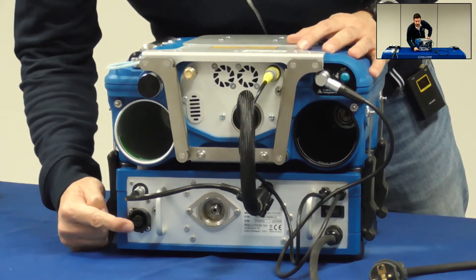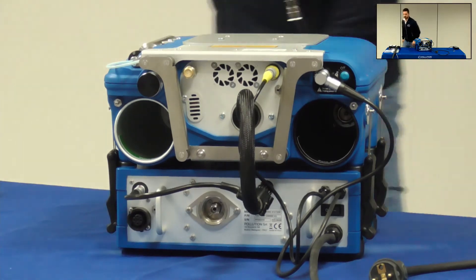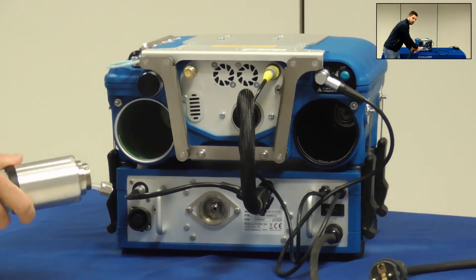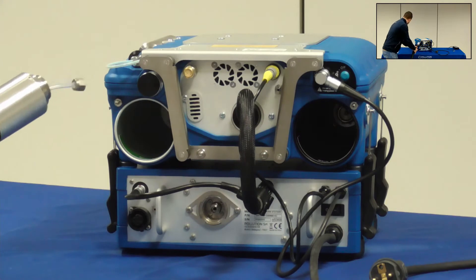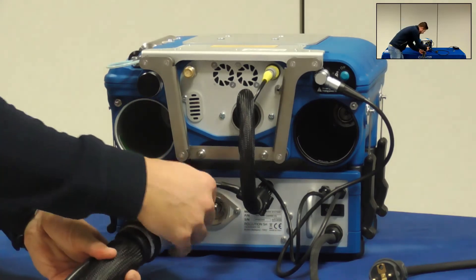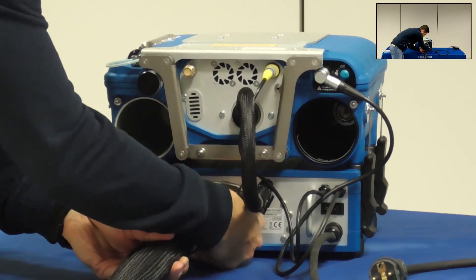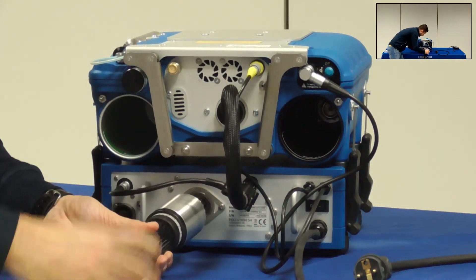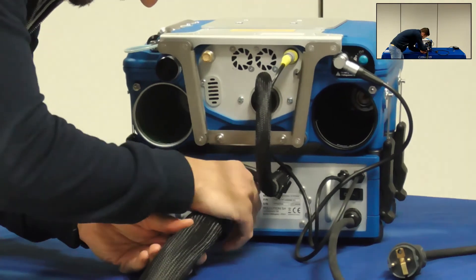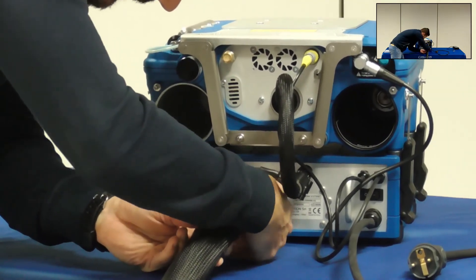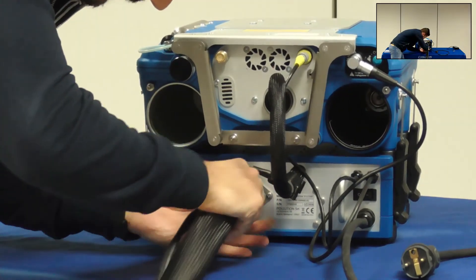Now I'll show you how to correctly connect the sampling line. First you need to screw the Swagelok connector and first the internal PFA tube, then the external metal cylinder which will protect the tube and prevent any bending or any problem.